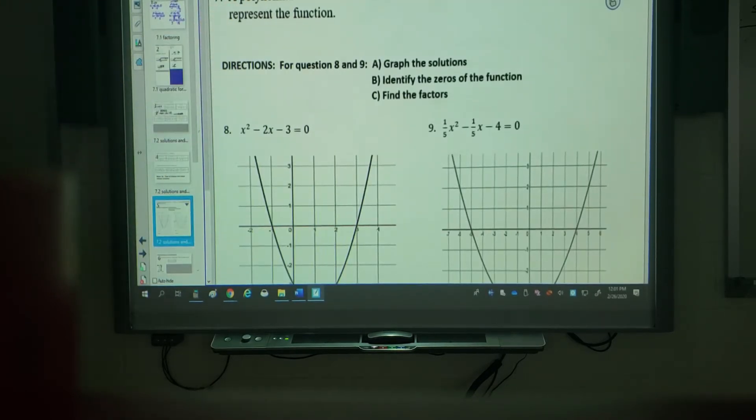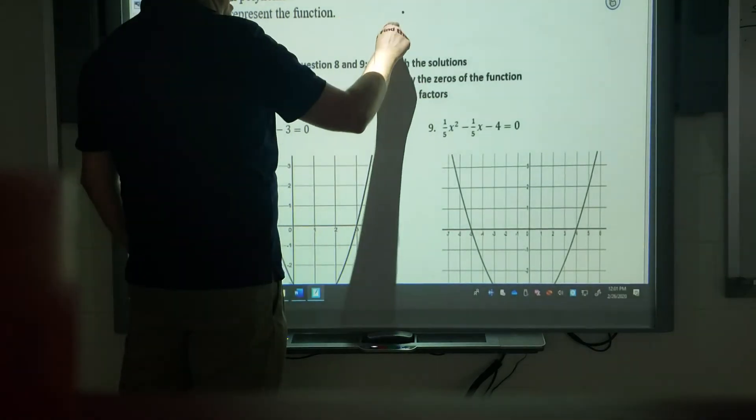A polynomial function has zeros at negative 9 and 5. Write an equation that could represent the function. So I know if I know the zeros, the roots, the solutions, the x-intercepts, all those things. And I know I can work out the factors while doing the opposite.